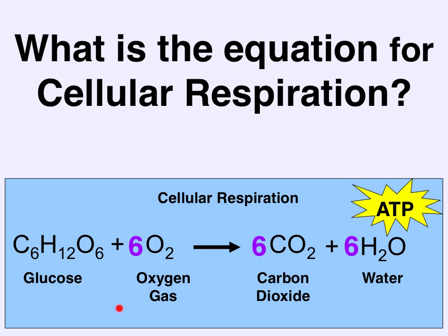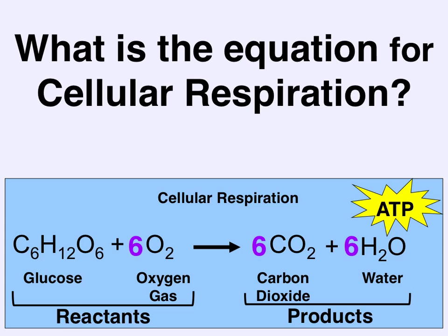Because these two things — glucose and oxygen — are on the left side of the arrow, they are the reactants. And on the right side of the arrow, these three things are the products: CO2, water, and ATP. They're the exact opposite reactants and products of photosynthesis.